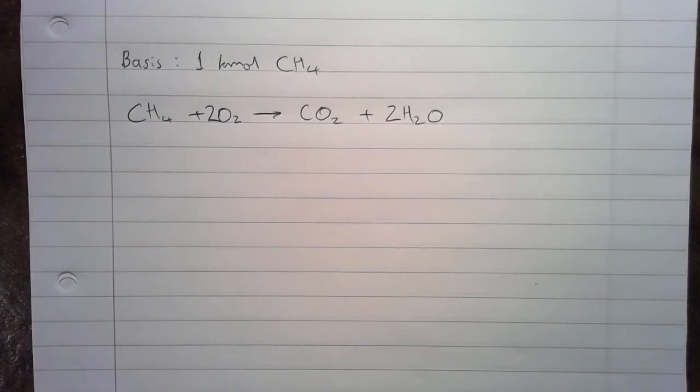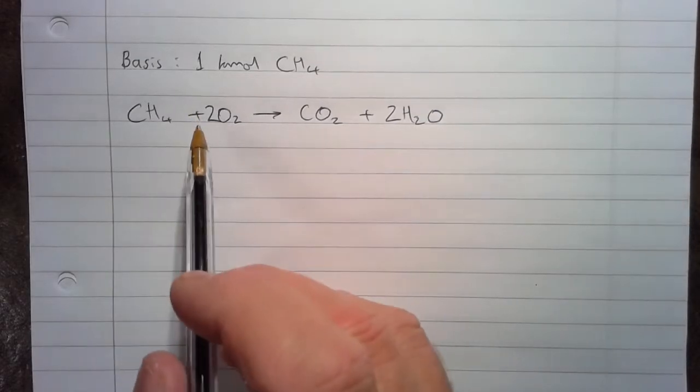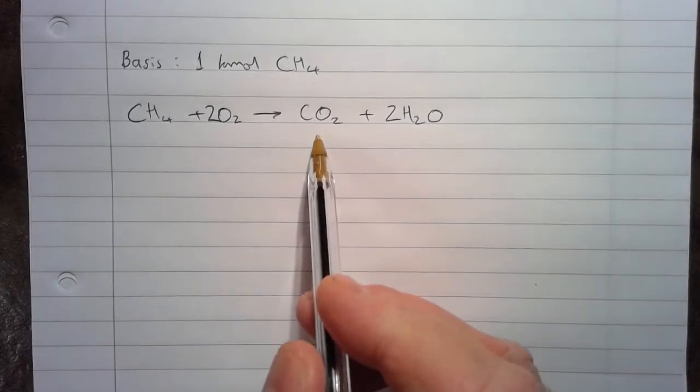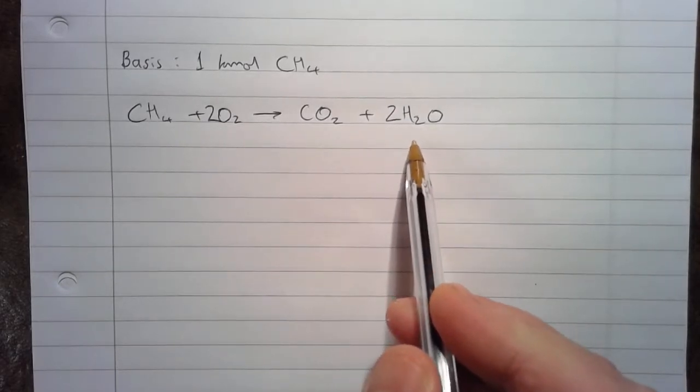To solve this problem, first of all, we need a balanced chemical equation for the complete combustion of methane. So we have CH4 plus 2O2 goes to CO2 plus 2H2O.